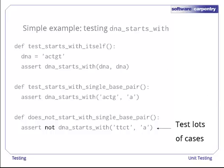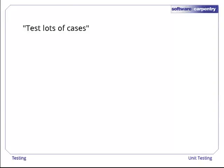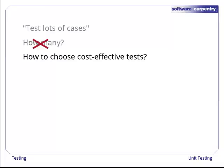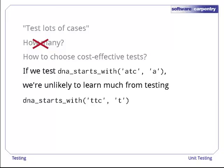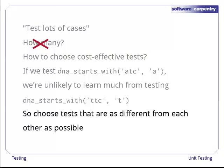Of course, the nose library can't think of test cases for us. We still have to decide what to test and how many tests to run. This brings up an important point. We know that we should test lots of different cases, but how many is lots? It turns out that's not actually the right question to ask. A better question is, how can we choose tests that are worth writing and running? For example, if dna_starts_with atc A works, there's probably not much point testing dna_starts_with ttc t. It's hard to think of a bug that would show up in one case but not the other. We should therefore try to choose tests that are as different from each other as possible, so that we force the code we're testing to execute in all the different ways it can.